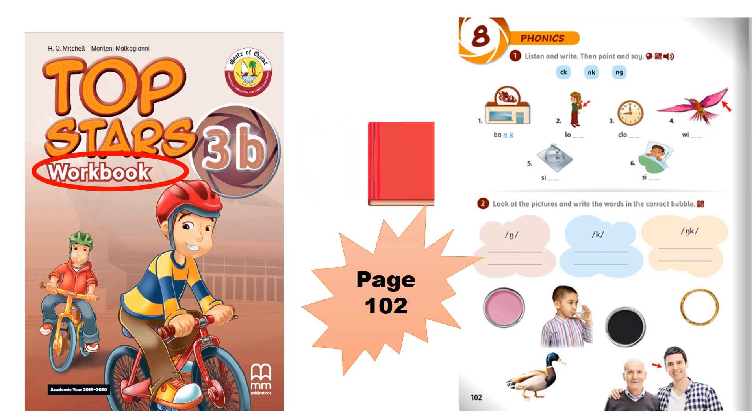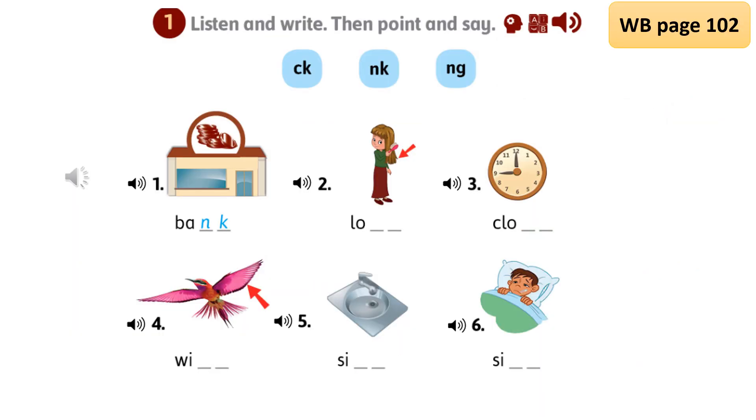Now open your workbook page 102. In exercise number one you have to listen and write. Complete the words with the letters CK, NK, or NG. Look at the pictures and remember the sound, then write. Point and say: one bank, two long, three clock, four wing, five sink, six sick.